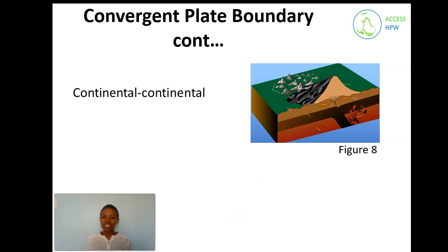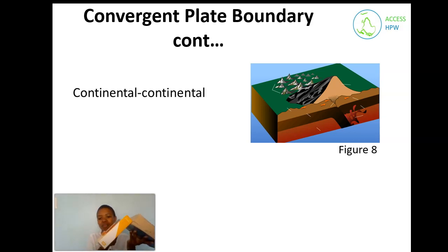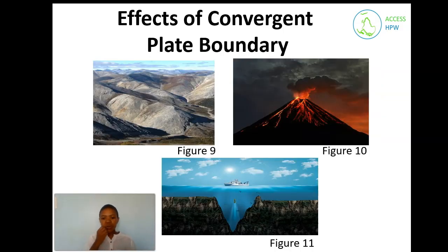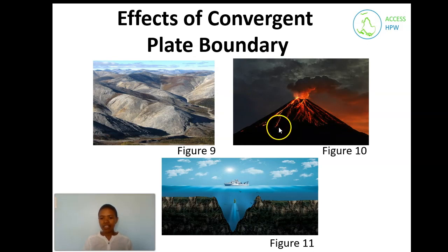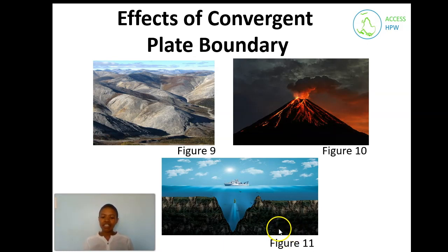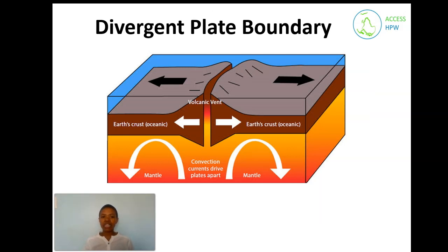The third type is continental-continental convergence — when two continental crusts move towards each other. Since neither is significantly denser, when they collide they move upward, leading to the formation of mountains, as shown in figure nine. Figure ten illustrates volcanic eruptions as a result of plate collision. Figure eleven shows a trench — trench formation is also an effect that occurs at convergent plate boundaries.